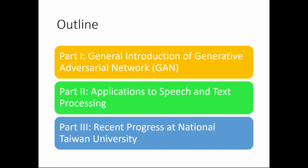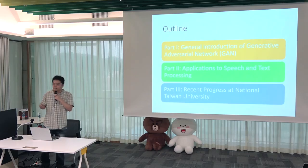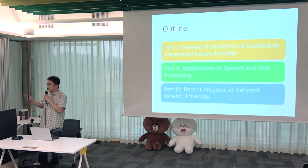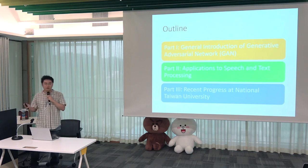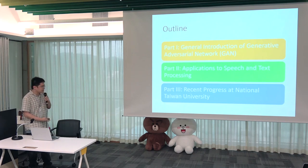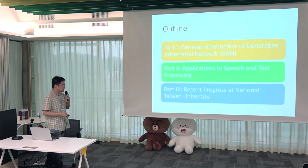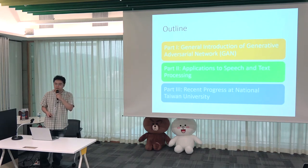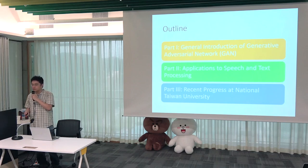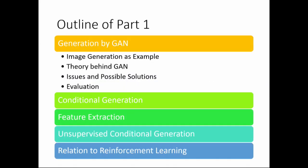This is the outline of this tutorial. In part one, I will give a general introduction about Generative Adversarial Networks. In the second part, I will show the application to speech and text. In the literature, most technology is proposed in image processing, but in this tutorial I'm talking about the application of GAN to speech and text processing. In the last part, I will talk about the recent progress in our research group.